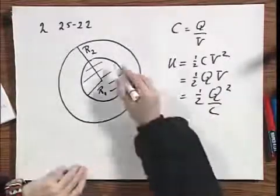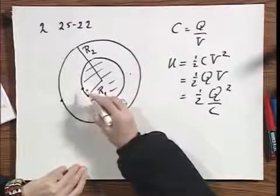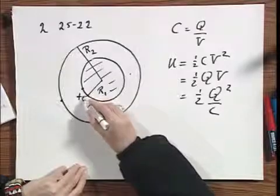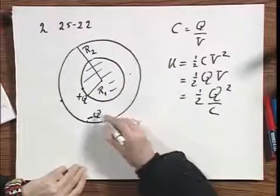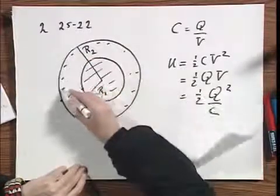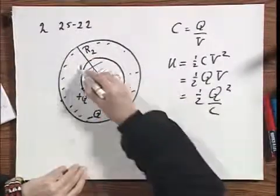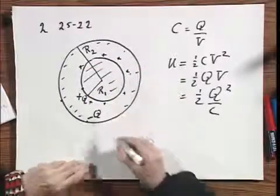And the question now is, what is the potential difference between here and here if the charge on this is plus Q and the charge on here is minus Q. The charge on here will be on the inside of the sphere. I leave you with the exercise to prove that, and the charge on the inner sphere will be on the outside of the sphere.